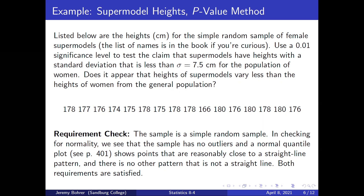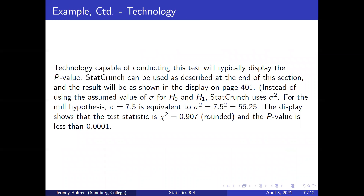Here are the numbers involved. The sample is a simple random sample. In checking for normality, we see that the sample has no outliers and a normal quantile plot shows points that are reasonably close to a straight line pattern with no other pattern that is not a straight line. Both requirements are satisfied. Technology such as StatCrunch can be used, and instead of using the assumed value of sigma for H0 and H1, StatCrunch uses sigma squared. For the null hypothesis, sigma equals 7.5 is equivalent to sigma squared equals 7.5 squared, which is 56.25. The display shows that the test statistic is chi-squared equals 0.907, rounded, and the p-value is less than 0.001.